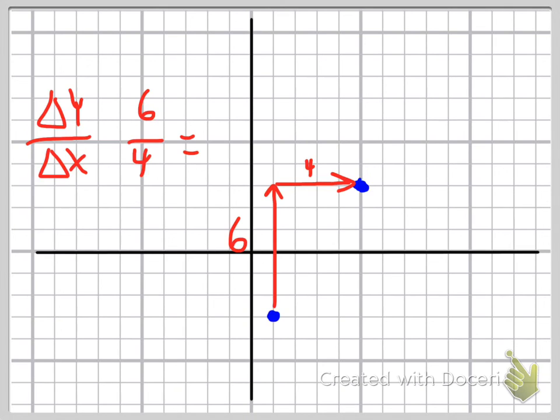which will now reduce down to three over two. Now you may notice the line that goes through that,